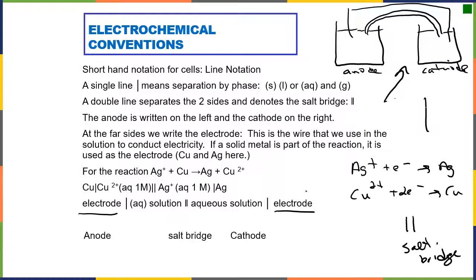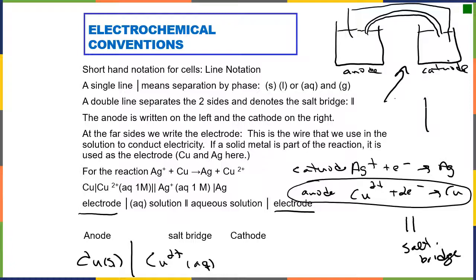This reaction is the anode, and this is the cathode. So copper is a solid — the electron is going to come off the copper. Inside the beaker of our half reaction, the anode is copper two plus. That is the end of the contents of the anode side. Then we have a two-line indicating our salt bridge, contents of the beaker at the cathode which are going to be Ag+, and then the final thing is the electrode at the cathode, which is Ag as a solid.